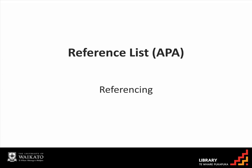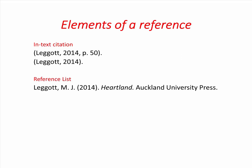A reference list provides the full bibliographic information of every source you have cited in your assignment or essay. With APA, if you have read an item but have not referred to it in your assignment, you do not include it in your reference list. You only include items you have actually cited.